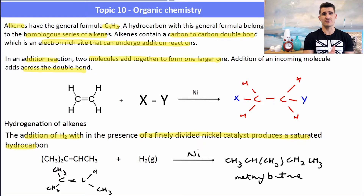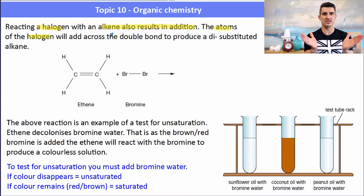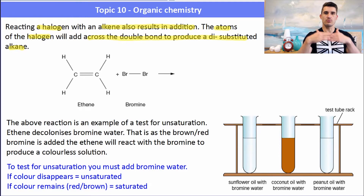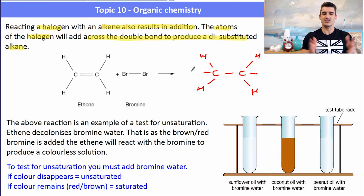If we react a halogen with an alkene, that also results in an addition reaction. The halogen atoms add across the double bond to produce a di-substituted alkane. For example, ethene reacted with bromine: the double bond breaks and a bromine atom adds to each end of the double bond, giving us a saturated alkane with bromine on each carbon — 1,2-dibromoethane.